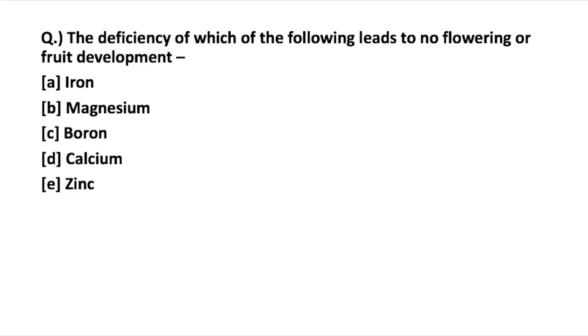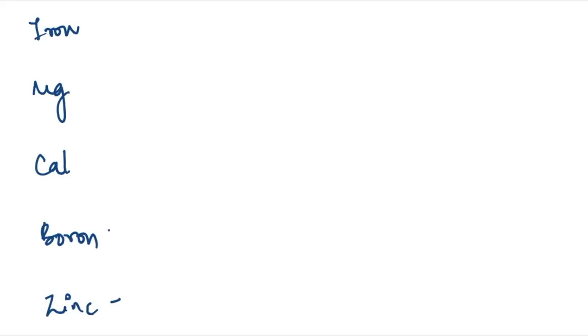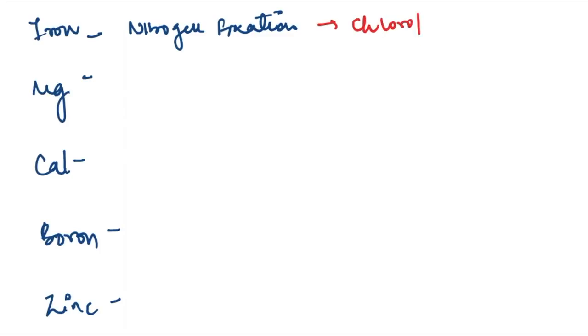The next question is: the deficiency of which of the following leads to no flowering or fruit development? The options are iron, magnesium, calcium, boron, and zinc — these are different plant nutrients. For iron, it is required for nitrogen fixation because it acts as a catalyst for chlorophyll. Note the word 'catalyst' here.